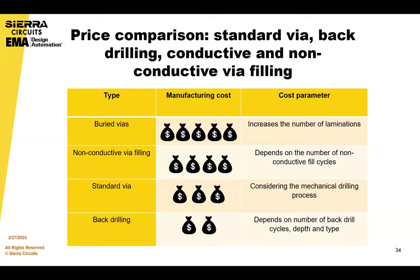Next level is the VIA fill process — it's expensive because you have to go through drilling separately, plating separately, and then the VIA fill process itself. Standard VIA is the least expensive — it's only one process. It can also be expensive if you're drilling very small VIAs. And lastly, back drilling does add a drilling step, but it's probably the least expensive option to deal with VIA stubs.